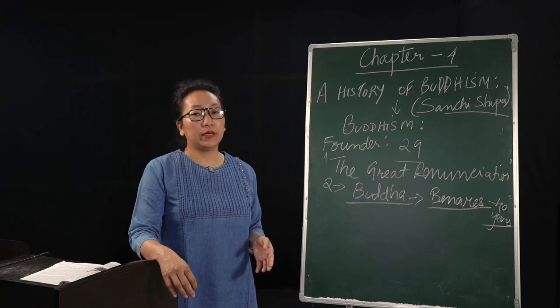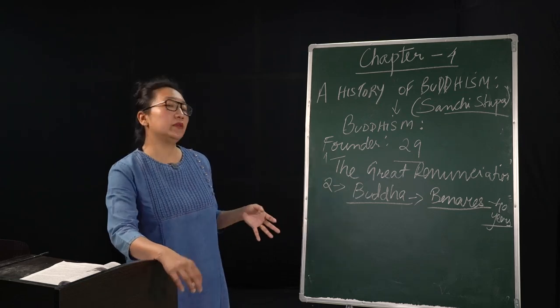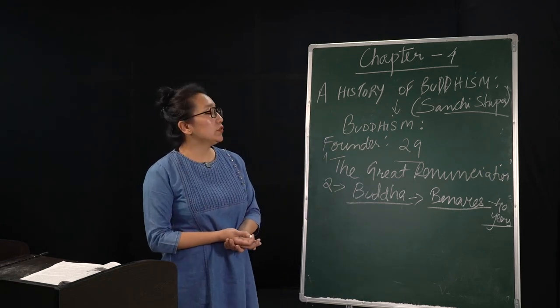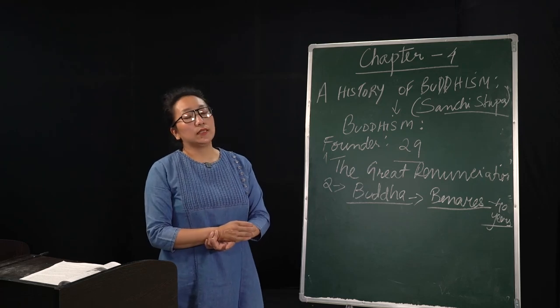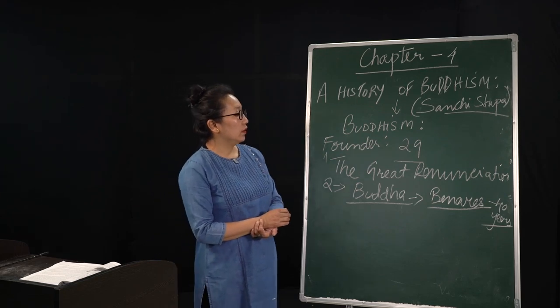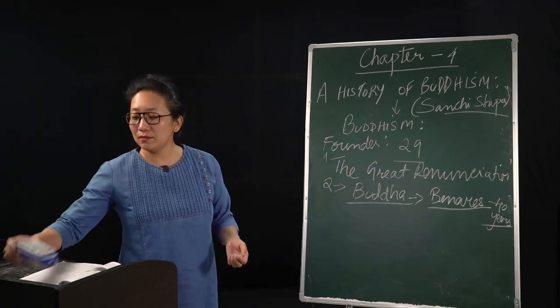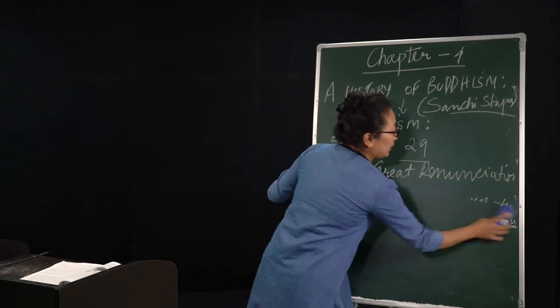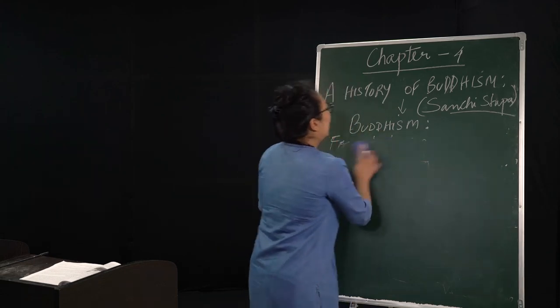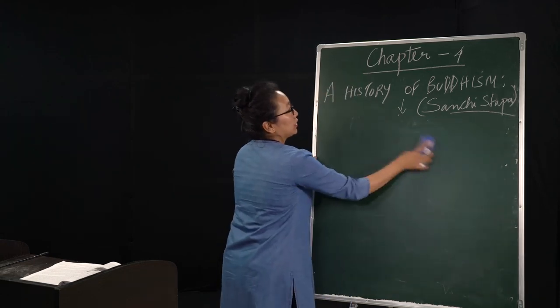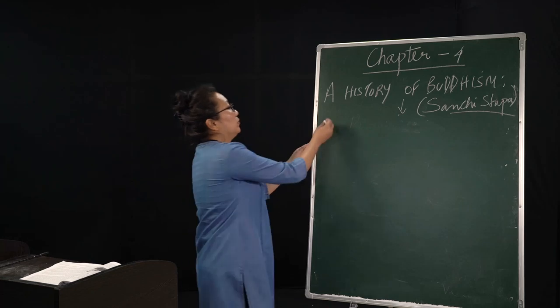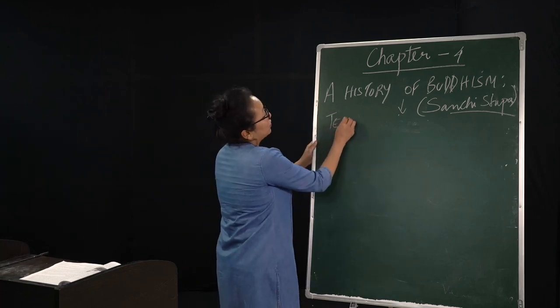So we see here that he went around all over India. Initially, when he received his enlightenment and he started preaching and giving out his sermons, he concentrated mostly around the Gangetic Plains, that is in Uttar Pradesh and Bihar. After receiving the enlightenment and after having learned many teachings since his childhood, he began to preach his ideas. And so we will now look at the teachings of Gautama Buddha.